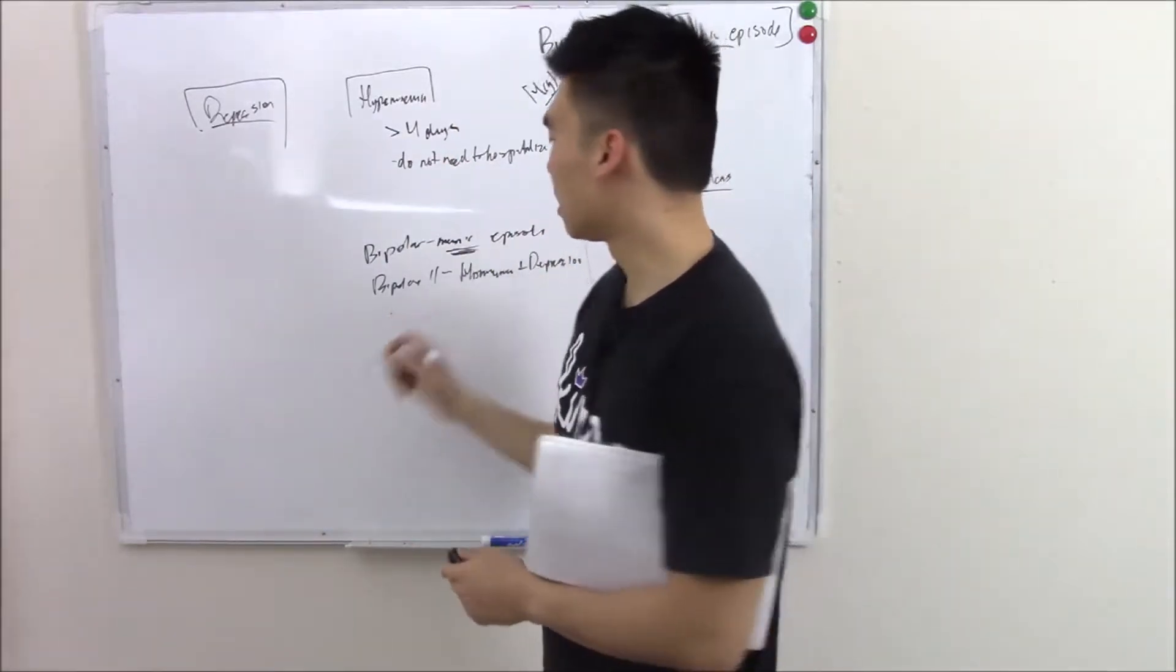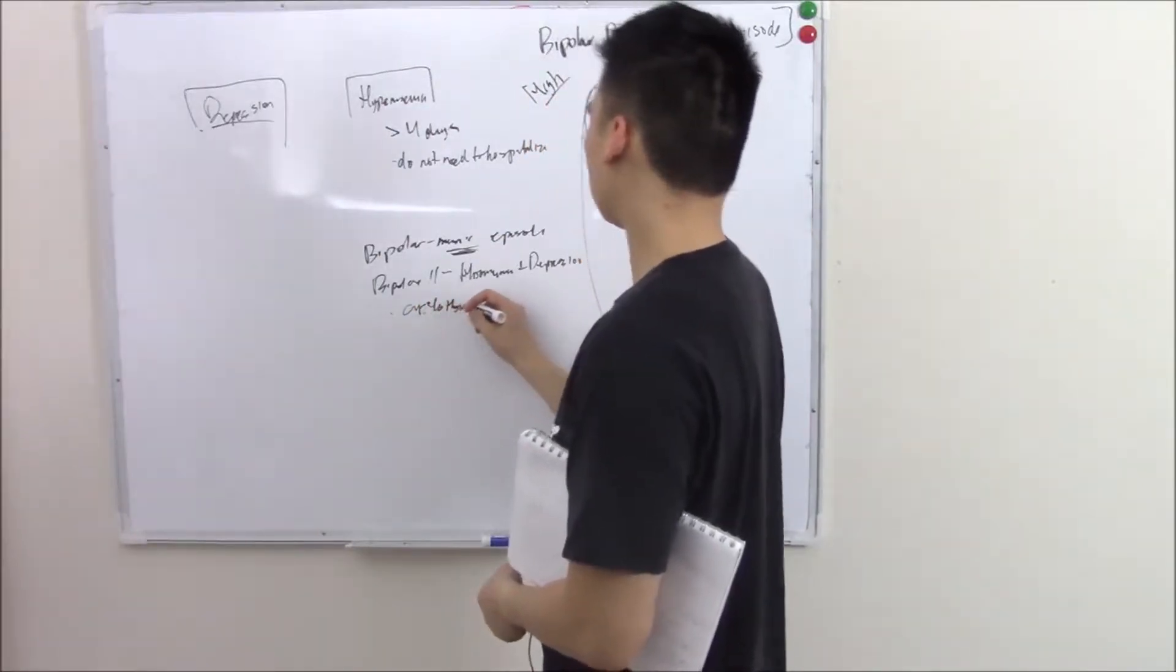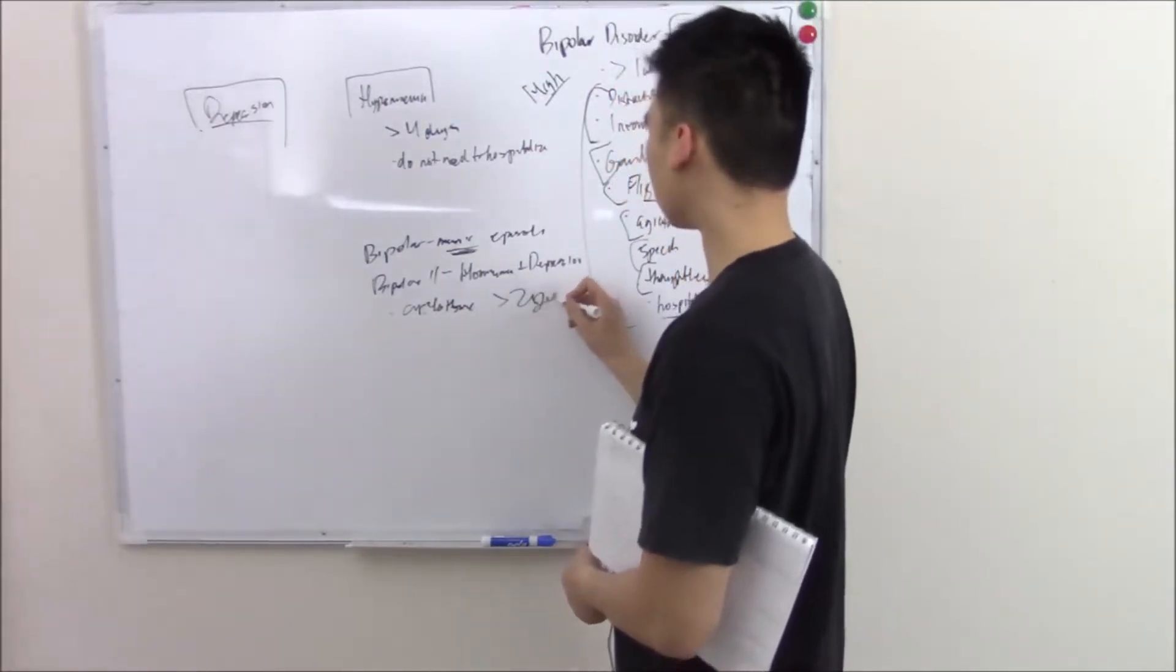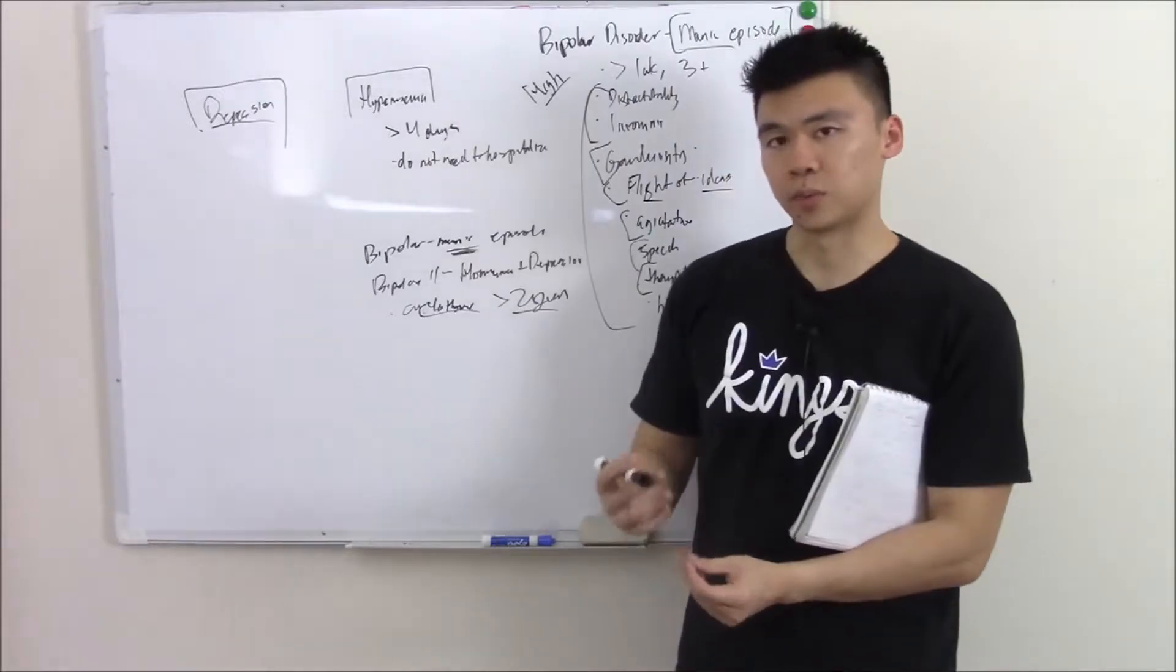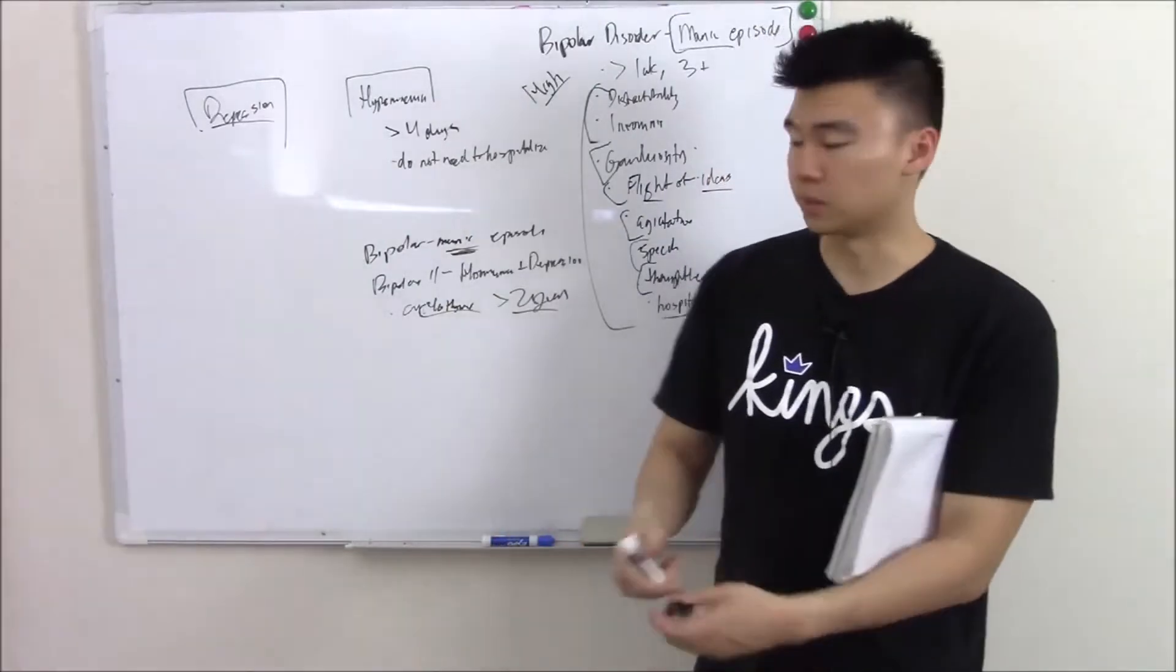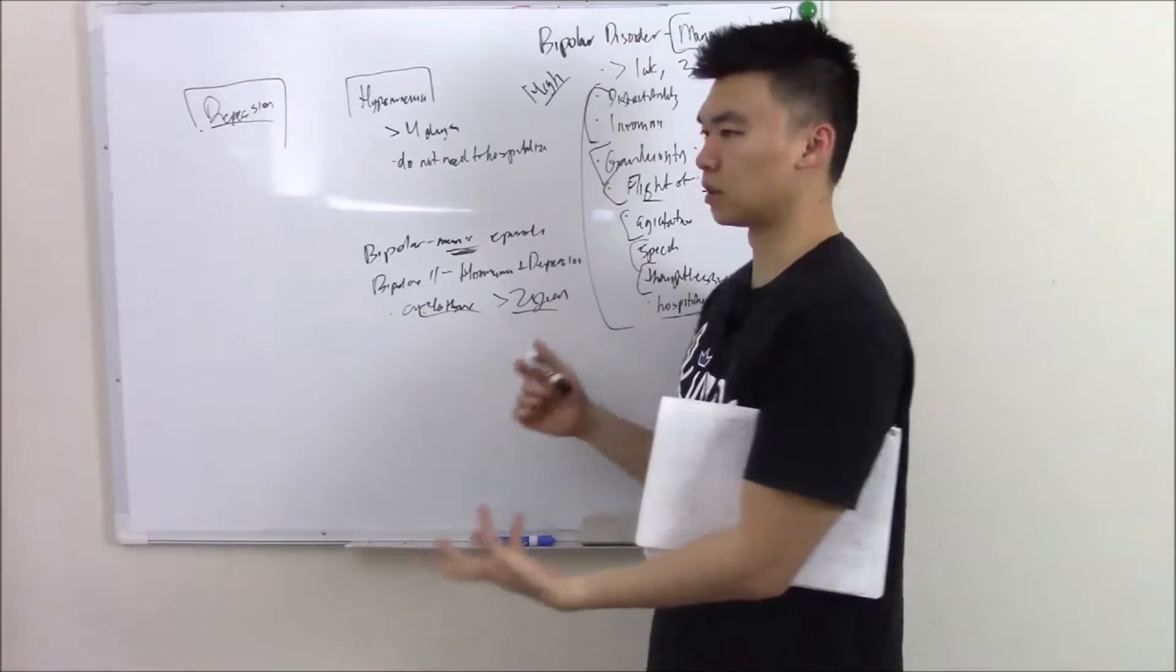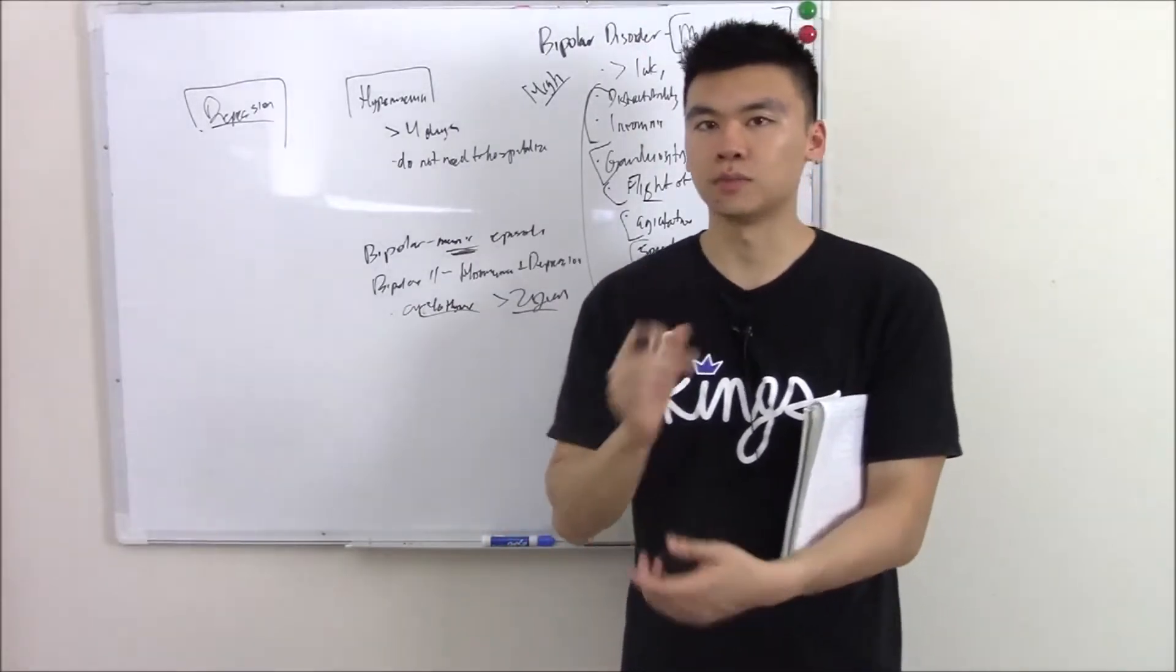And then you have one more form called cyclothymic. This is an even milder form. It can last over two years. We talked about dysthymic when we talked about depression. We call that that really long, kind of milder, but more chronic form of depressed mood. In the same vein, we have cyclothymic. So those two are very similar in their time course, in their mild manner. Shouldn't be too hard to memorize those two.